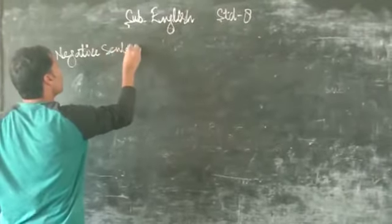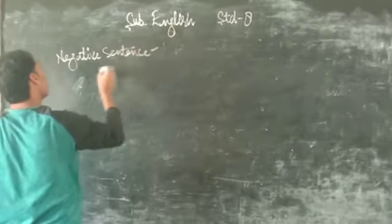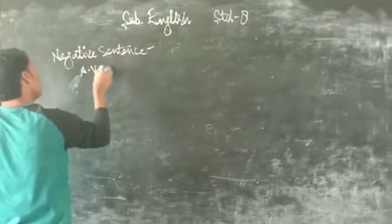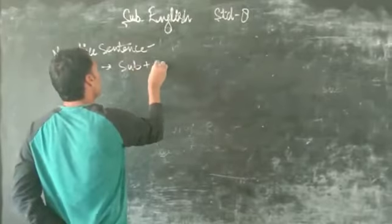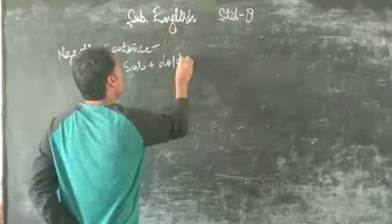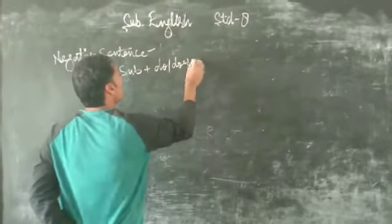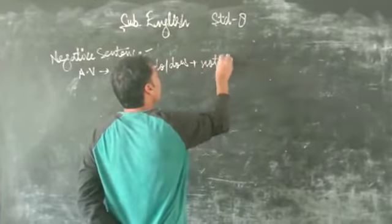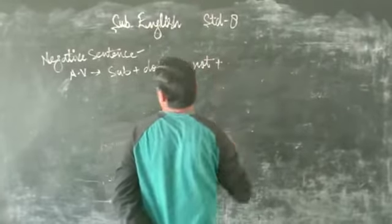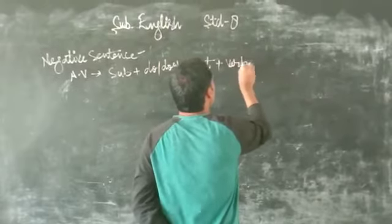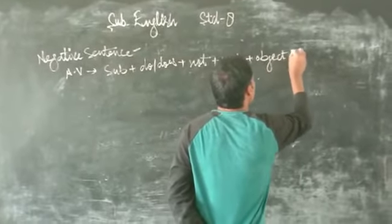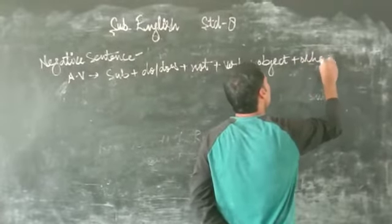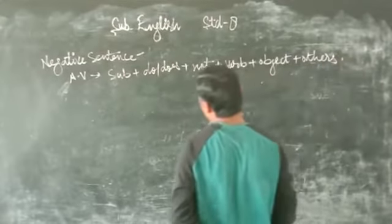Negative sentence. Active voice: Subject plus do or does plus not plus verb plus object.